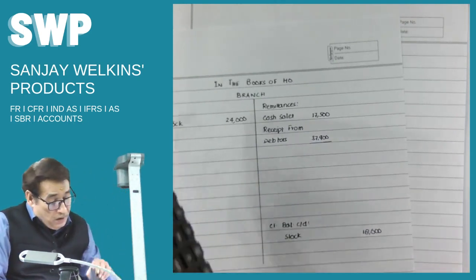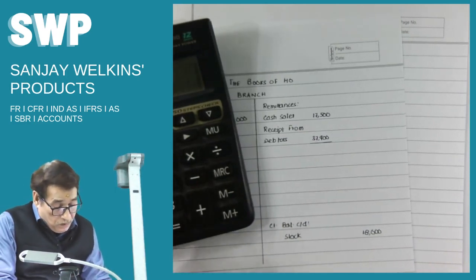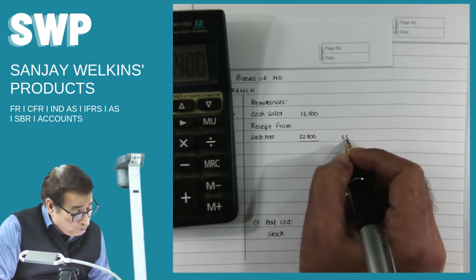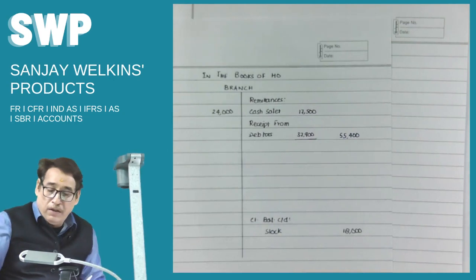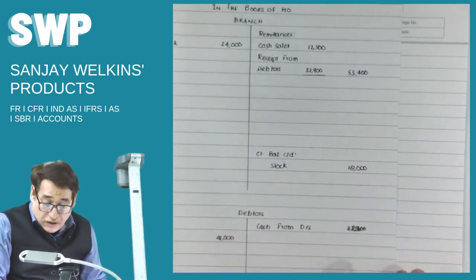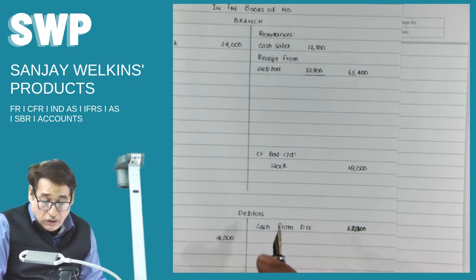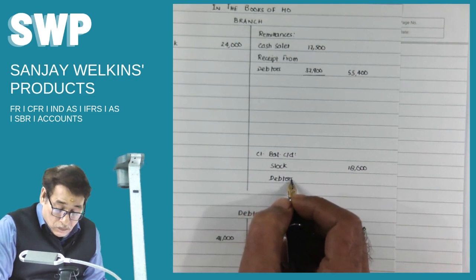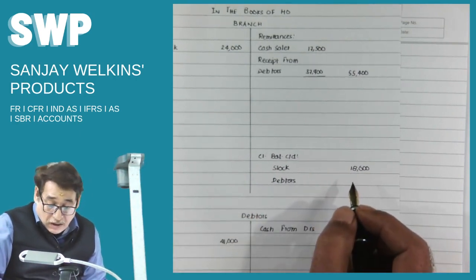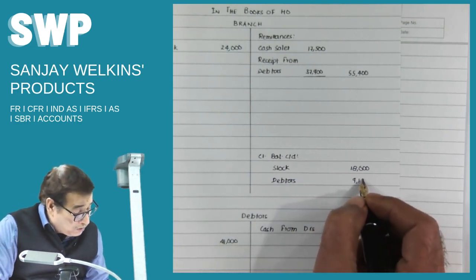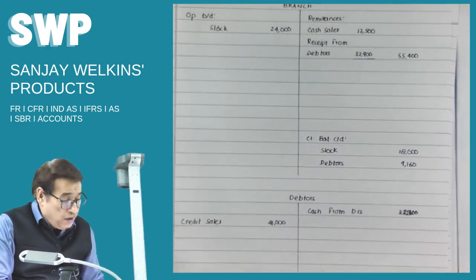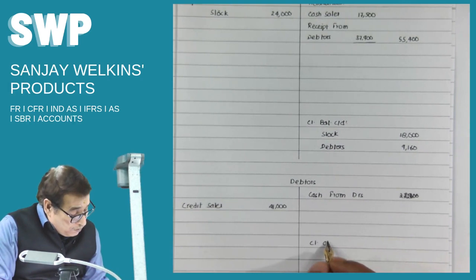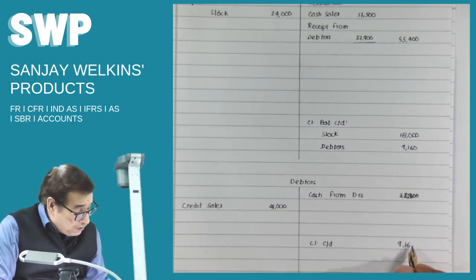Total remittances: 17,500 plus 37,900 equals 55,400. Write 55,400 in the branch account. Closing balance of debtors on 31st March 2022 is 9,160 — write as balance c/d in the branch account and also in the debtors account: 9,160.